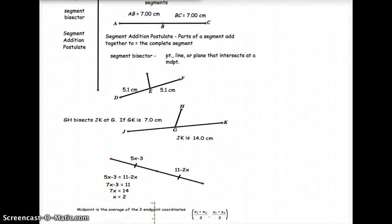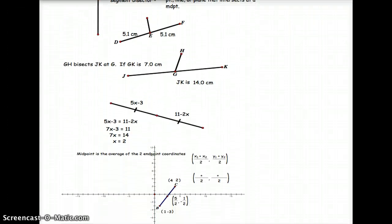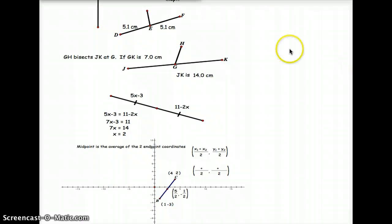Let's go ahead and move up a little bit. So now based on our information that we're given here, it says segment GH bisects segment JK at G.